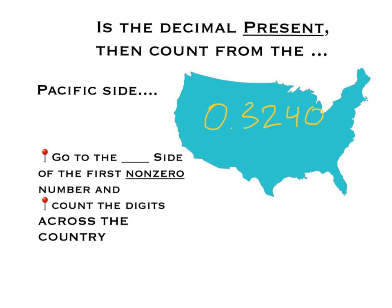If the decimal is present, count from the Pacific side of the number. Go to the first non-zero number and count the digits across the rest of the country. So for 0.3420, we find the decimal, then count 3, 2, 4, 0 — they all count because we start from the Pacific side at the first non-zero. That gives four sig figs. The key is deciding whether the decimal is present or absent, and knowing which side to start counting on.